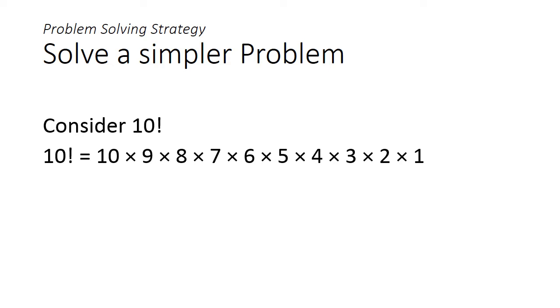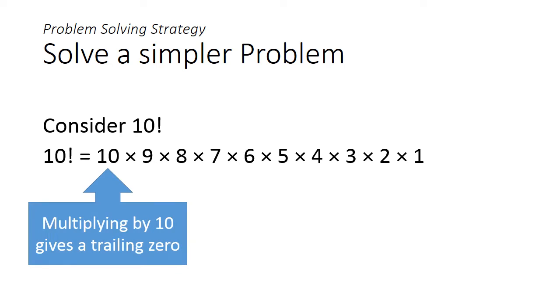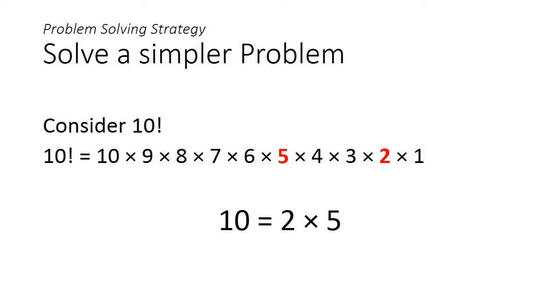We know from basic math that if you multiply anything by 10 you would get a trailing 0. So 10 factorial would have at least a trailing 0. But is that it? If we look closer, 2 multiplied by 5 would also give us 10. So 10 factorial would actually have 2 trailing 0s.